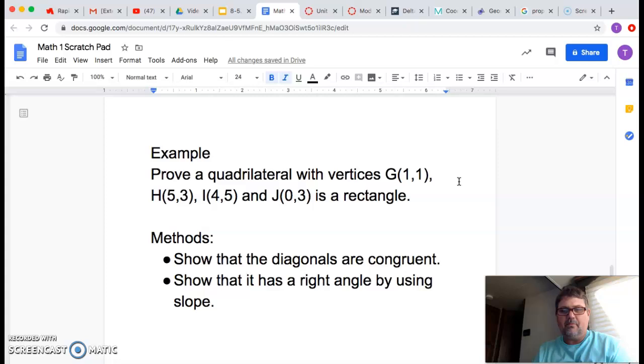Okay, and what we wrote up there earlier was, well the method would be like this. If we show that the diagonals are congruent, then that proves it's a rectangle. If we can show that it has one right angle, it's a rectangle.